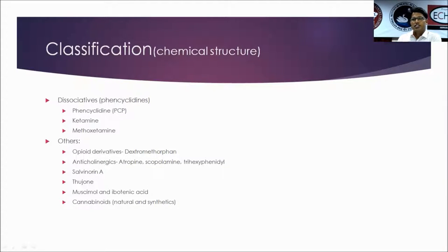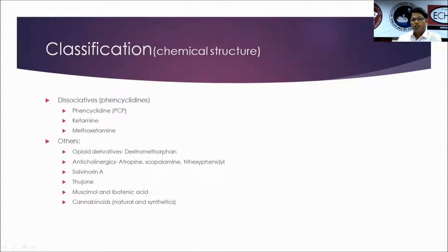Coming to miscellaneous drugs, there are some opioid derivatives — dextromethorphan, which is usually present in cough syrups — and anticholinergics like atropine and trihexyphenidyl. Then salvinorin, a very new compound available from some plants in Mexico, used for religious and addiction purposes. And cannabinoids, which are well known.